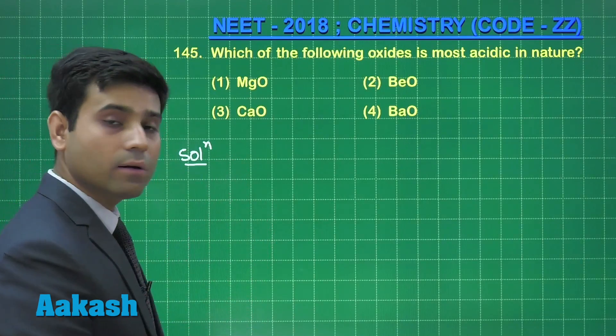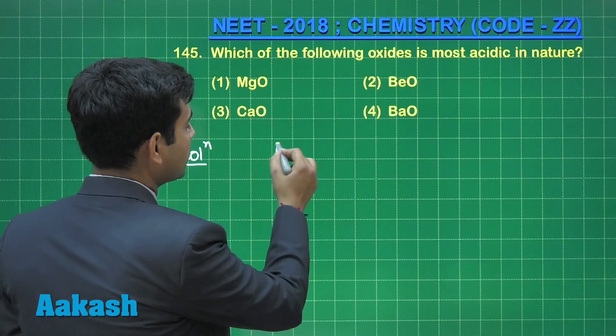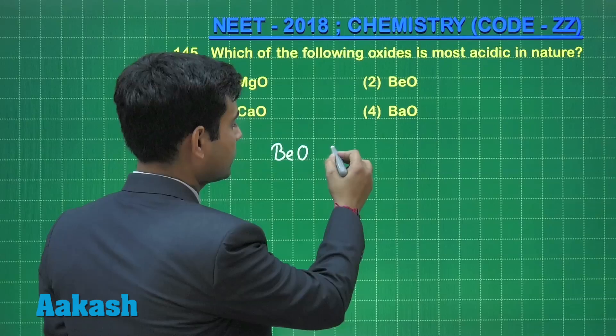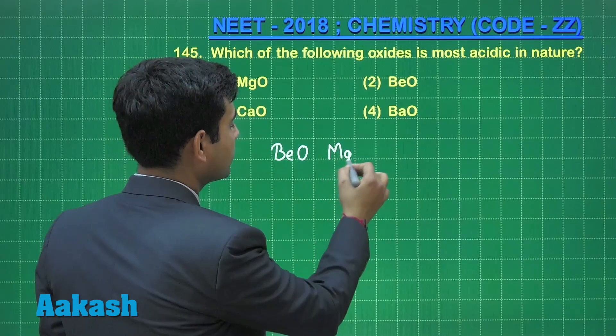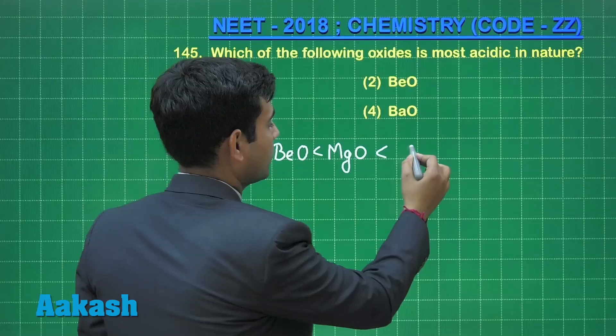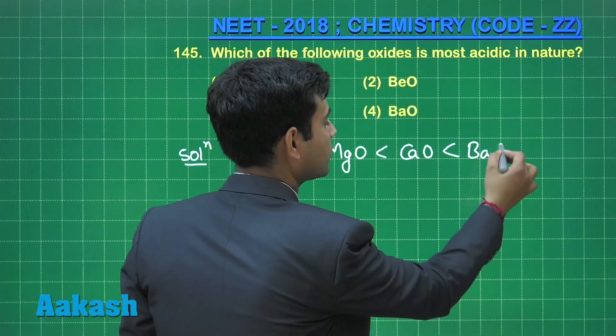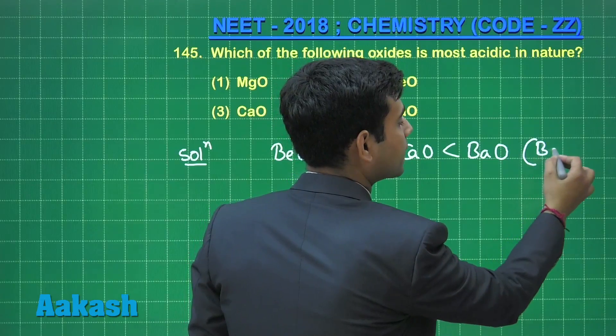These are all metal oxides. Their basic strength will increase in this order: beryllium oxide is less than magnesium oxide is less than calcium oxide is less than barium oxide. This is order of basic character.